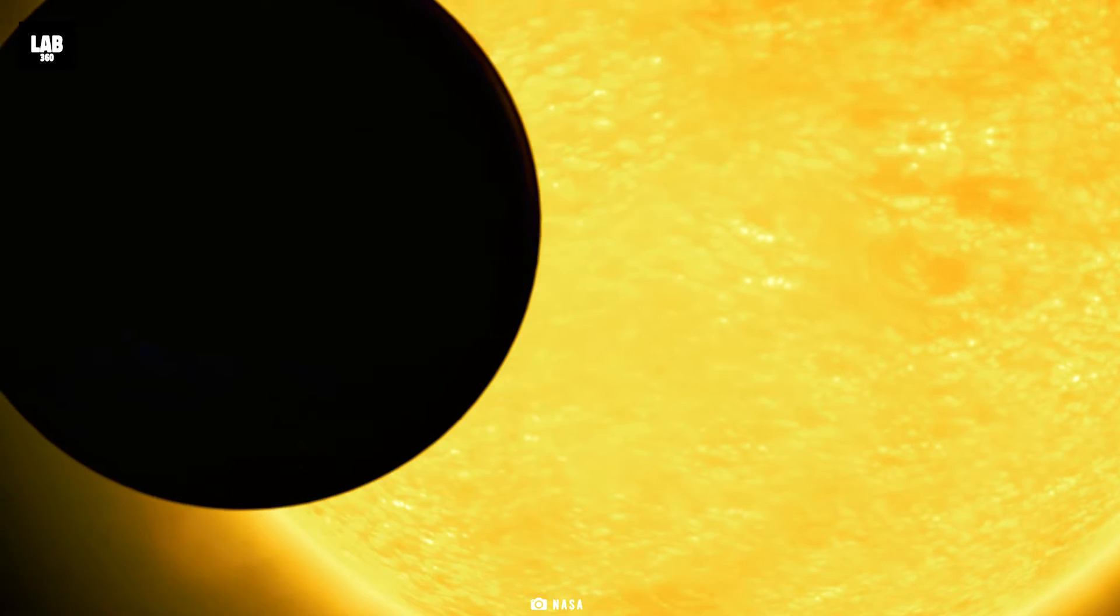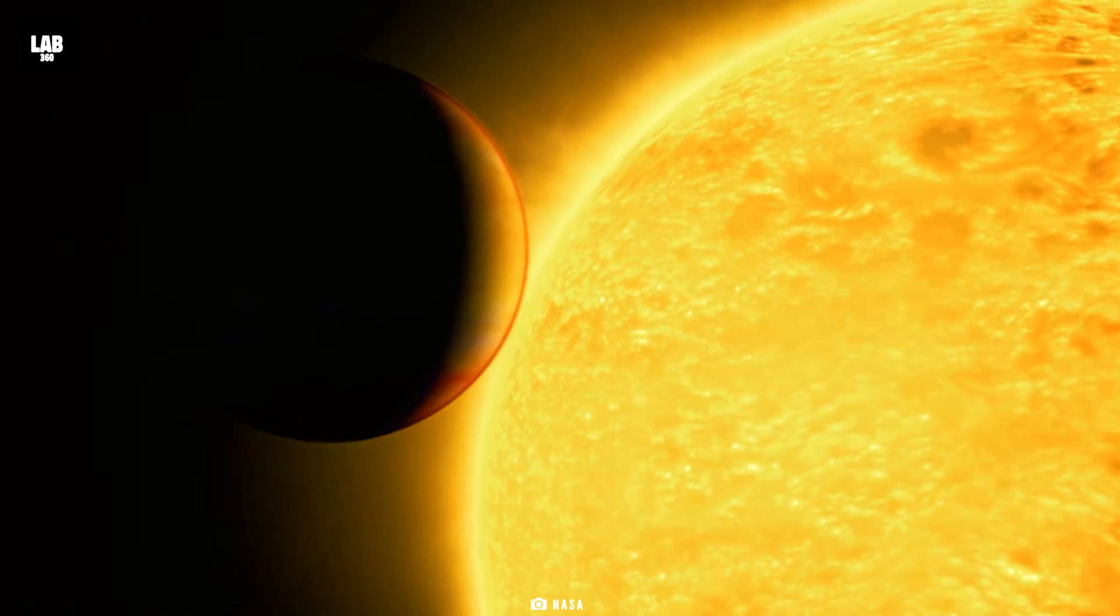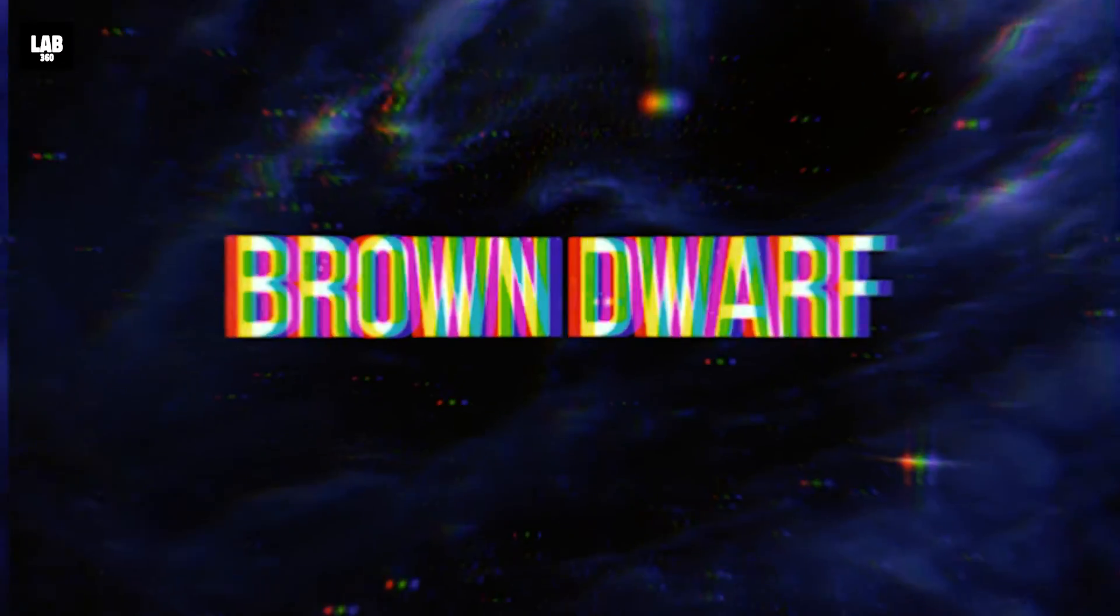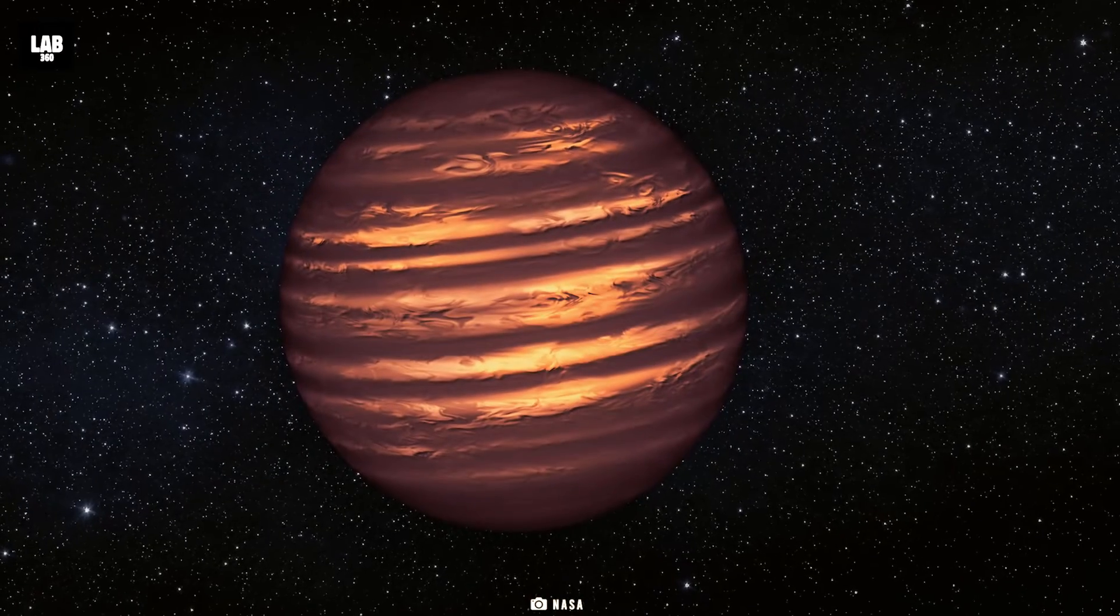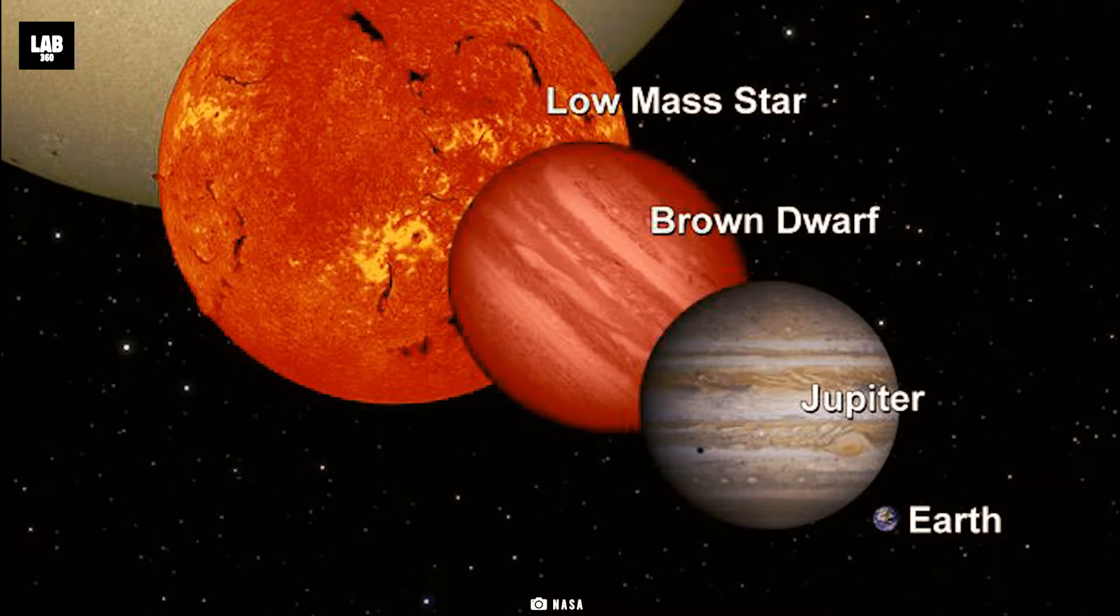Believe it or not, it is more likely that there might be over a trillion exoplanets in our Milky Way galaxy alone. Brown dwarfs: these are substellar objects that have more mass than the big gas giant planets like Jupiter and that of a small star.